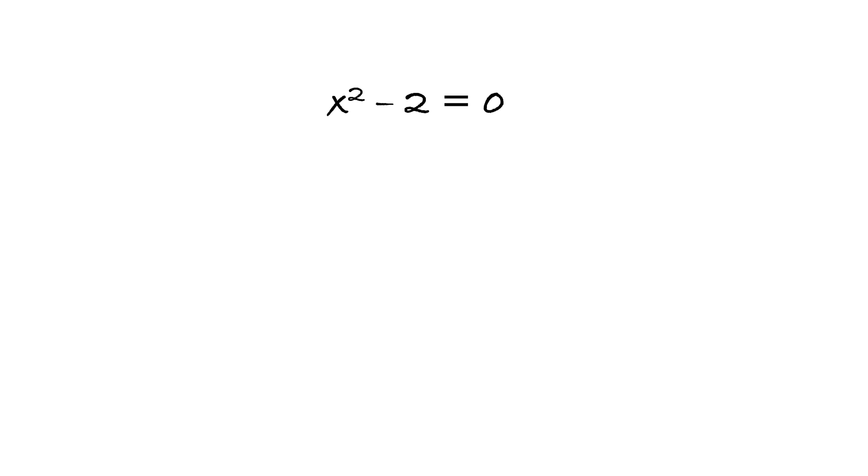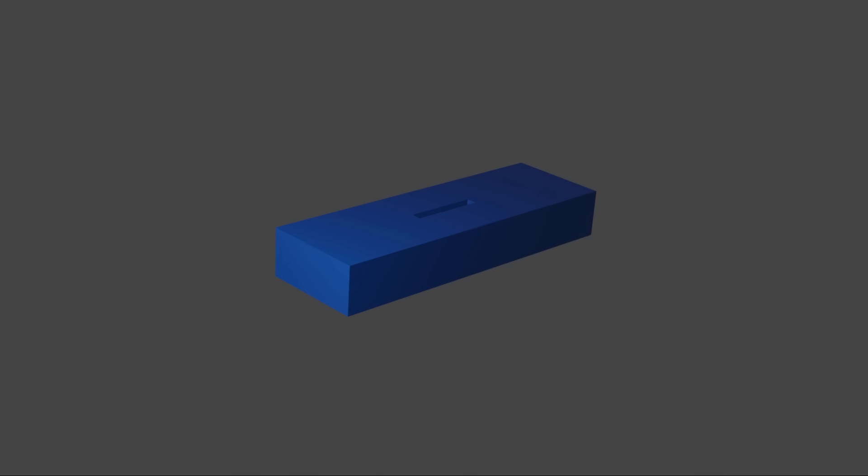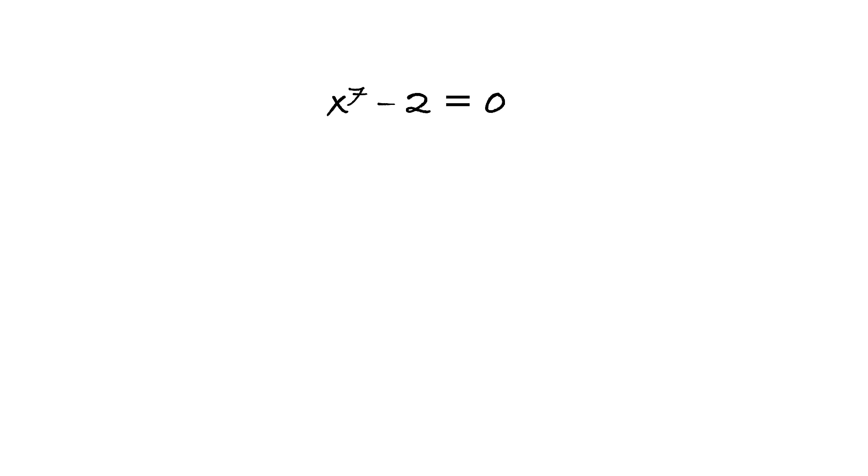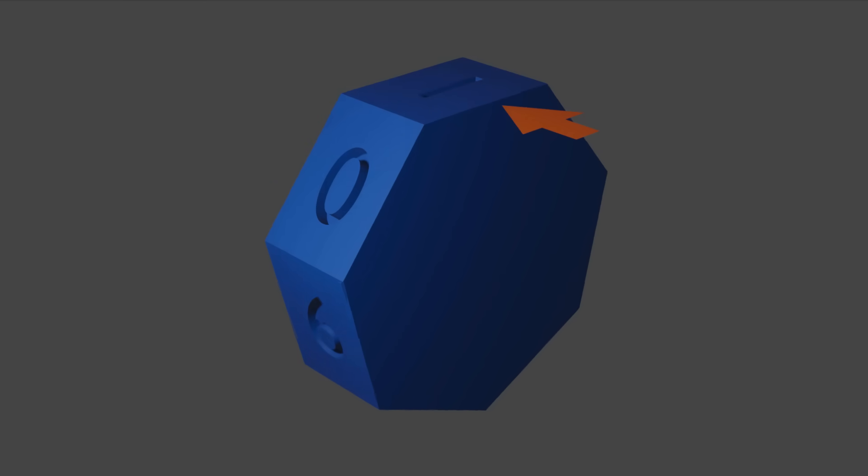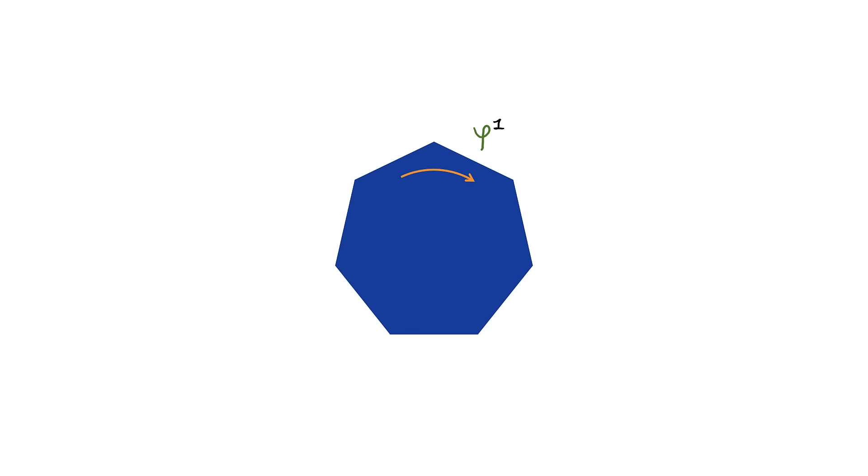Our simple example of equation x squared minus 2 equals 0 gave us a two-element group that consists of epsilon, the trivial symmetry, and phi, the symmetry that switches the two roots and can be thought of as a mirror reflection or just turning the set by 180 degrees. Using this analogy, we can say that an equation x to the seventh minus 2 equals 0 will have seven roots and will have Galois group of seven elements that can be thought of as rotations of a heptagon. And rotating the heptagon by one notch will be an element phi of the group, and every other element can be obtained by applying phi multiple times, which is the same as powers of phi.